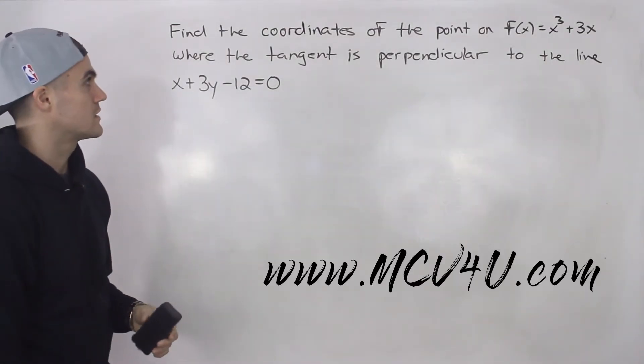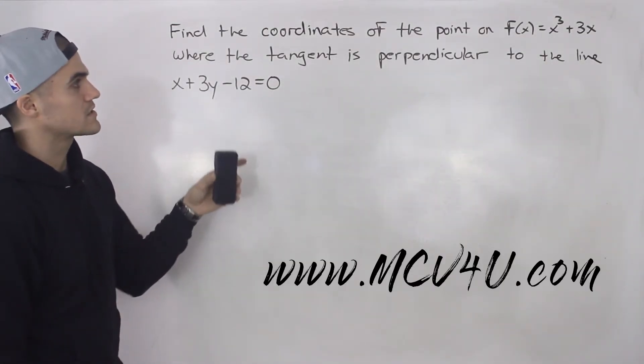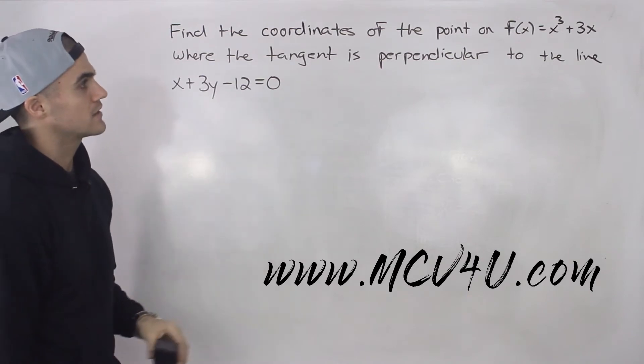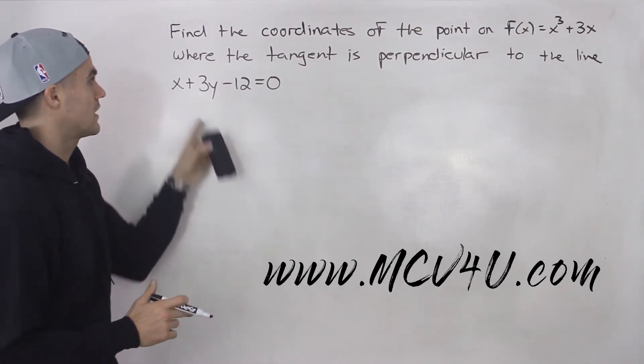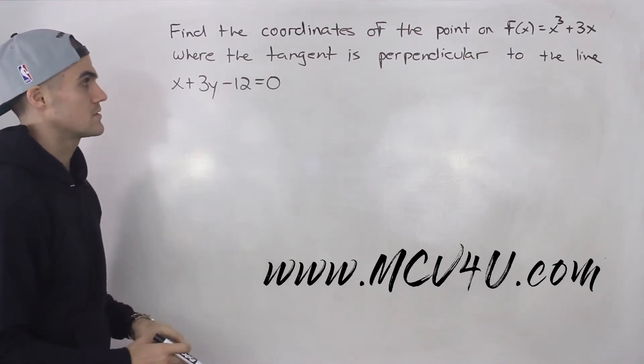What's up everybody, Patrick here. Moving on to the next question, we have to find the coordinates of the point on f(x) = x³ + 3x where the tangent is perpendicular to the line x + 3y - 12 = 0.